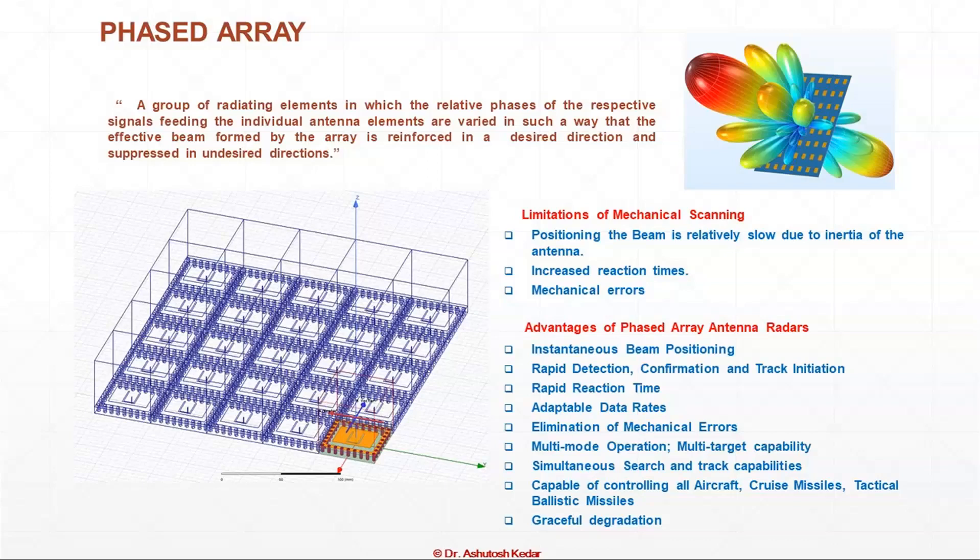What do we mean by graceful degradation? If 10% of the elements in the phased array system fail, the whole system will still be working effectively, giving performance — obviously with a compromise. For example, if you are looking for a gain of 30 dBi and 10% of elements fail, you may get a gain down by 1 dB or 1.5 dB, which in radar terms means the range comes down.